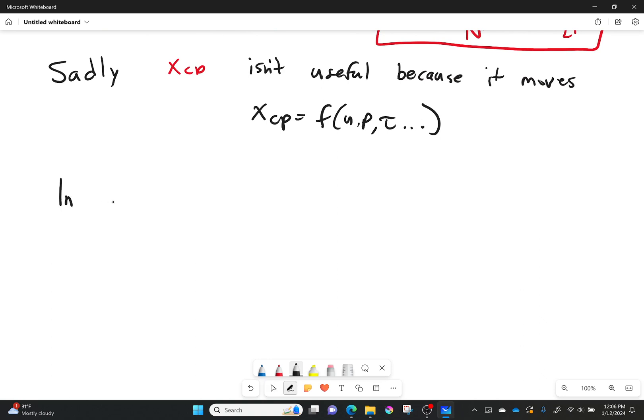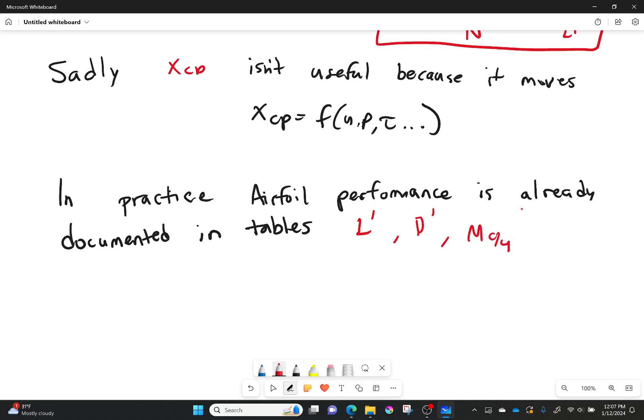Well to sum it all up, in practice, like I said in our very first lecture, airfoil performance is already documented in tables, so you just look it up. I'll be showing you how to do that. And we usually look at it in terms of L prime, D prime (drag per unit span), and our moment at the quarter chord (per unit span). Why the quarter chord? We'll find that out eventually.